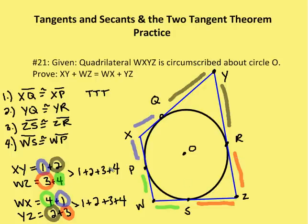So I can see that XY plus WZ is equal to 1 plus 2 plus 3 plus 4, and WX plus YZ is equal to 1 plus 2 plus 3 plus 4. I've got a purple or blue, a black or red, and a green segment. Again, the colors are the congruent segments. So if I add congruent segments to congruent segments, then their lengths are going to be congruent, and that is how I prove that XY plus WZ is equal to WX plus YZ.